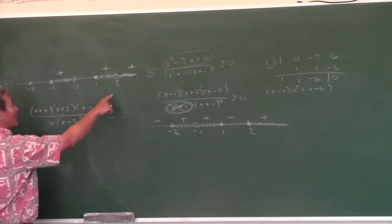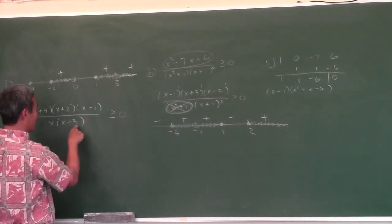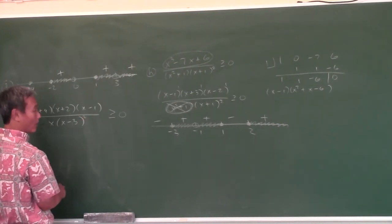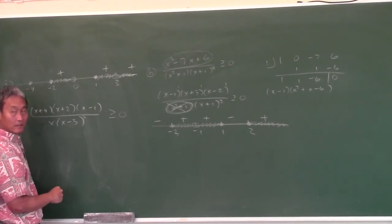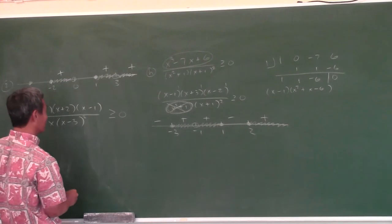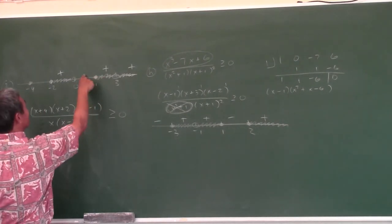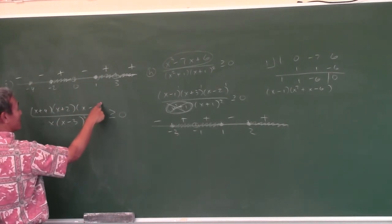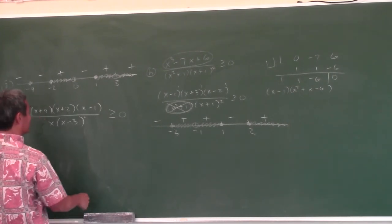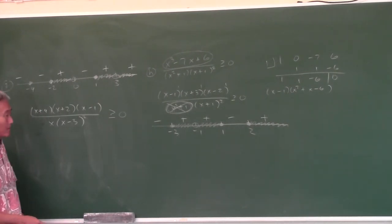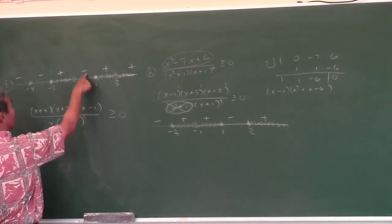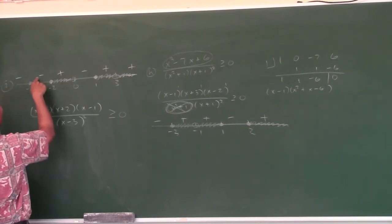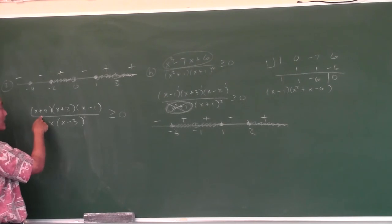What about the powers? 3 came from this factor — see how it stays the same, so you need an even power on this one. Let's go with 2. And if it changes, you need an odd power. So negative 2 needs an odd power. But negative 4 stays the same, so negative 4 needs an even power. The answer is boxed up.